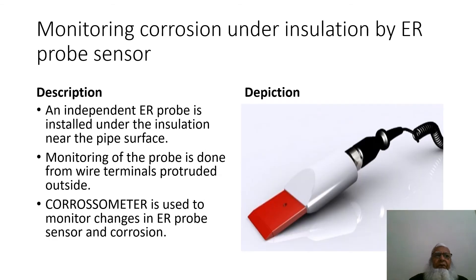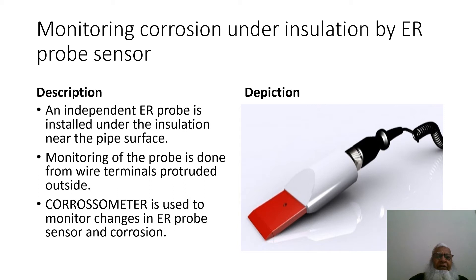The next technique is monitoring corrosion under insulation by ER probe sensor. An independent ER probe is installed under the insulation near the metal surface. Wire terminals protrude outside the insulation, and a corrosion meter is used to monitor changes in the ER probe sensor and corrosion rate. The ER probe is shown on the right-hand side of the slide.